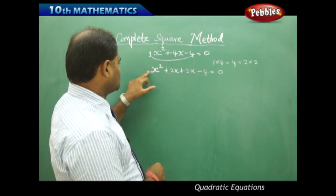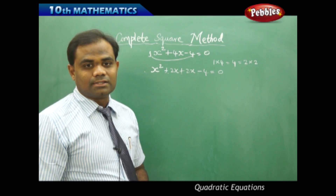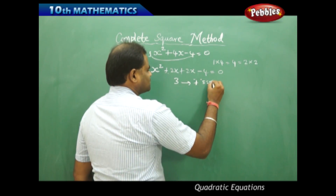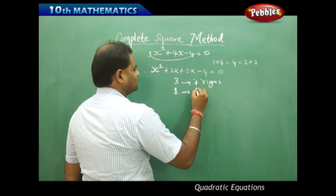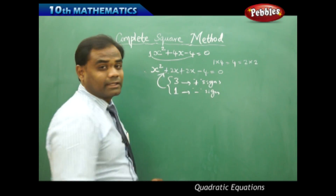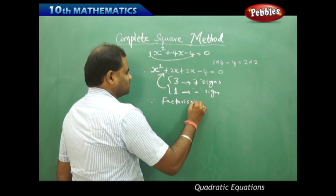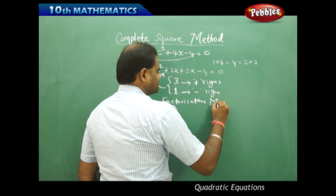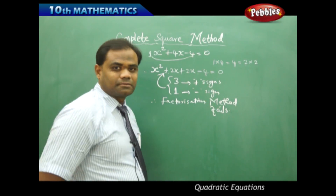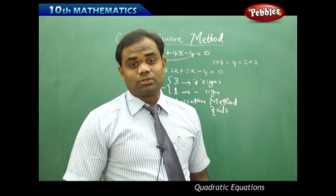When I count the plus signs — 1, 2, 3 — there are 3 plus signs and 1 minus sign, which is an odd case. So factorization is not possible; the factorization method fails. In such quadratic equations, the factorization method may not be a suitable choice.